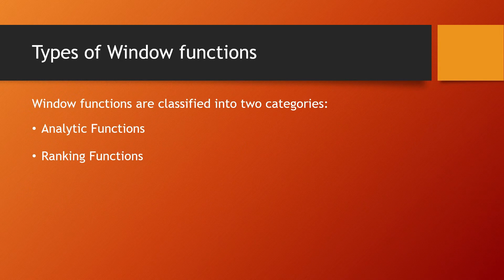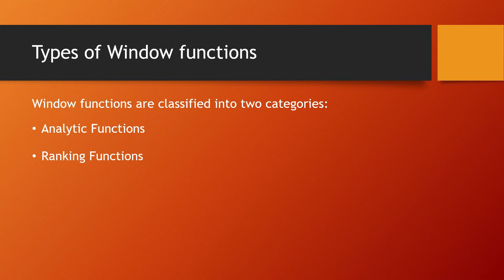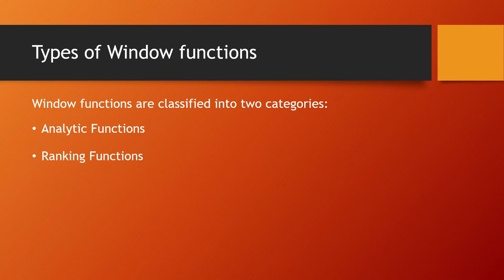Types of window functions. Window functions are basically classified into two categories: analytic functions and ranking functions. Let's go through them one by one and understand them in detail.